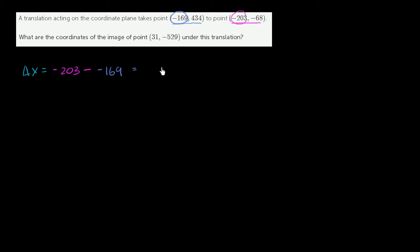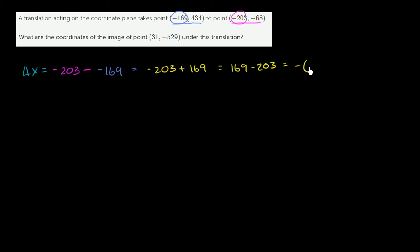This is the same thing as negative 203 plus 169, which is the same thing as 169 minus 203, which is the same thing as the negative of 203 minus 169. That's going to be 34, so this is going to be negative 34. That's our change in x.